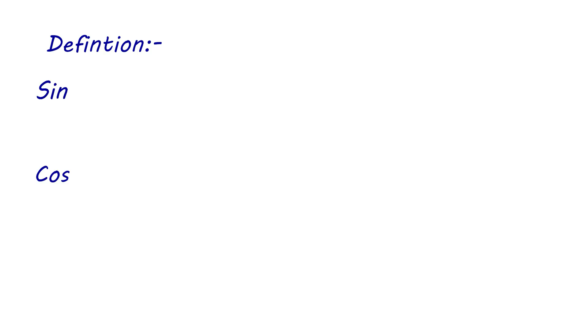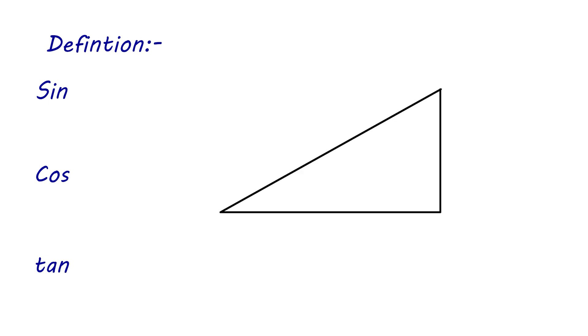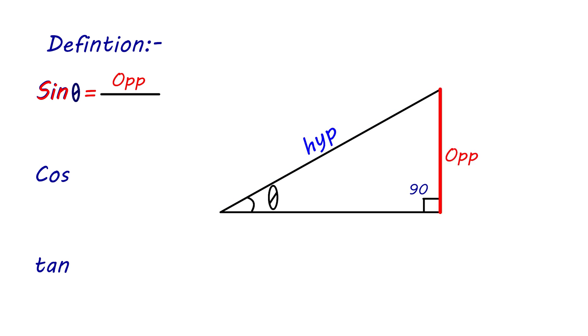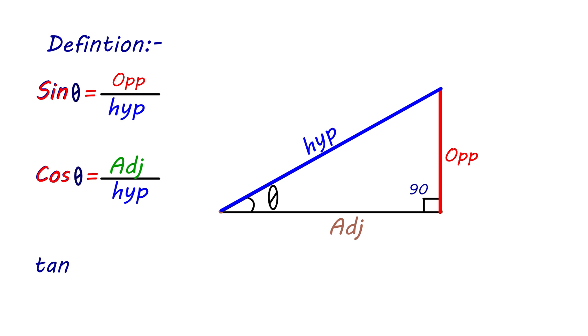We start with the definitions for sine, cosine, and tangent for an angle theta in a right triangle. A right triangle has one angle equal to 90 degrees. Sine of theta equals opposite leg divided by hypotenuse. Cosine of theta equals adjacent leg divided by hypotenuse. Tangent of theta equals opposite leg divided by adjacent leg.